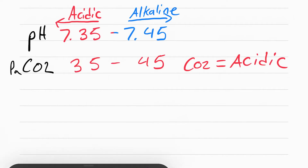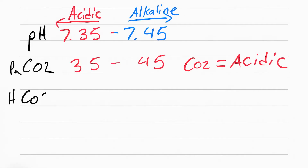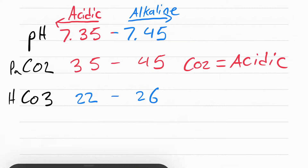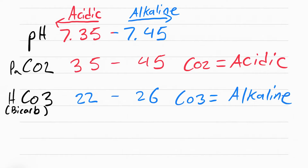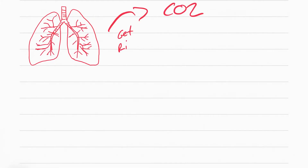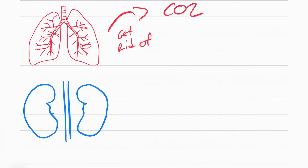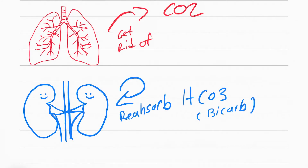You need to know that HCO3 is 22 to 26. The other name for HCO3 is bicarbonate. HCO3 is alkaline, so the higher the HCO3, the more alkaline the patient is. The last rule you need to know is that the lungs blow out CO2 and the kidneys reabsorb HCO3.